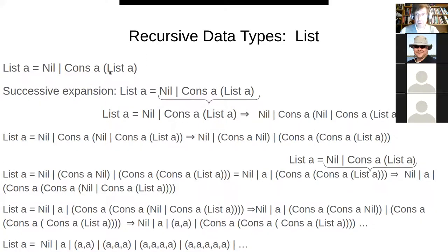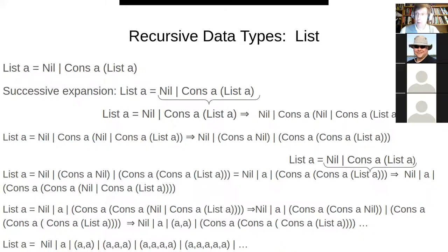So list of A, if you expand it this brutal way, turns into: Nil, or A, or (A, A), or (A, A, A), or (A, A, A, A) — continuing for all possible natural numbers. This basically tells us the possible lists of different sizes: an empty list, a list with one thing, two things, three things, four things, five things, and so on.